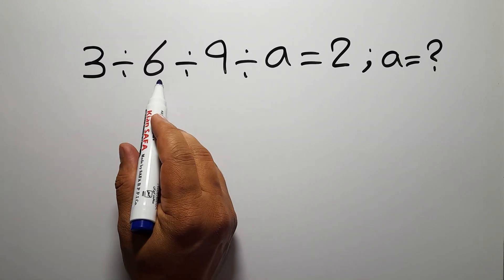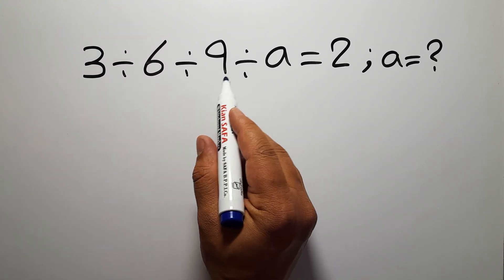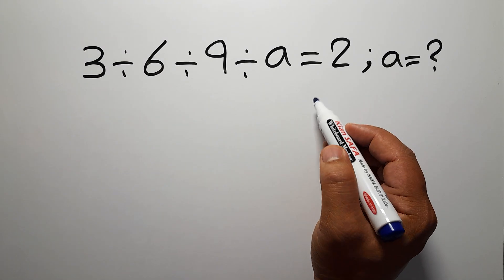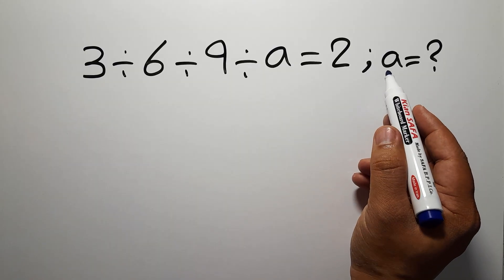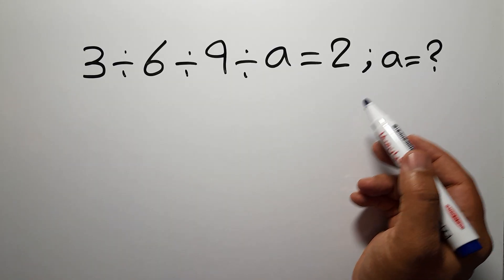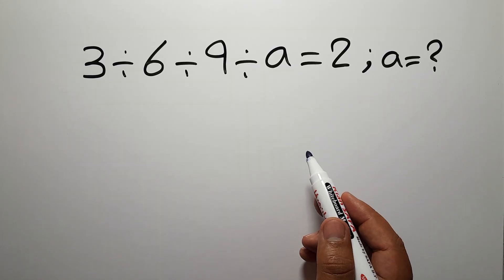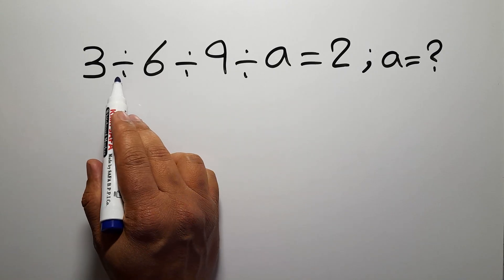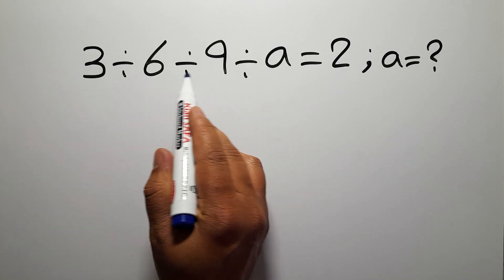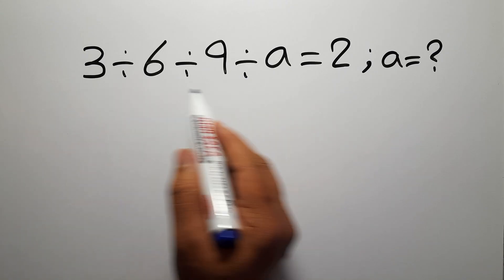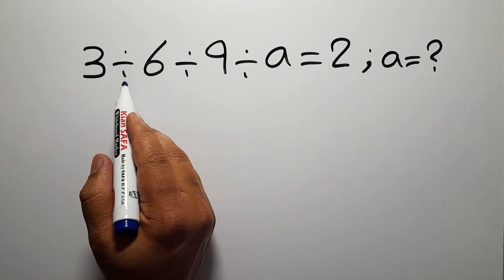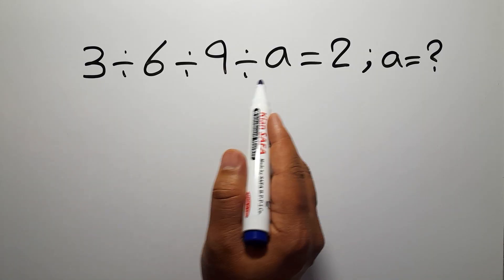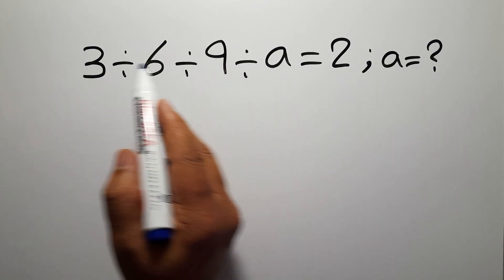3 divided by 6 divided by 9 divided by a equals 2. Our goal is to find the value of a. On the left hand side we have three divisions, and when we have more than one division in an expression, we have to work from left to right.